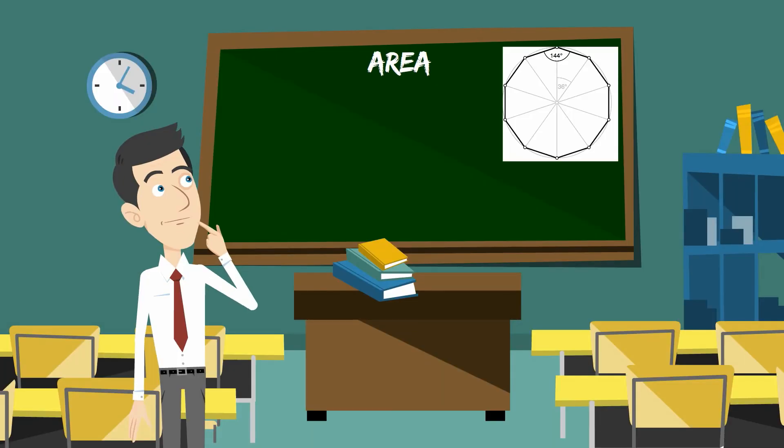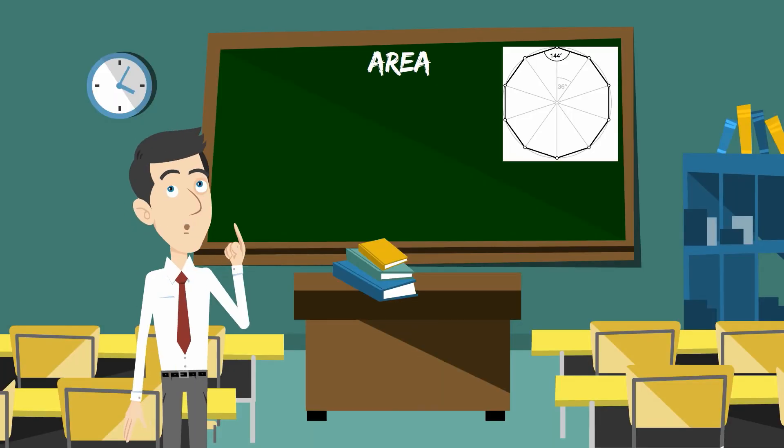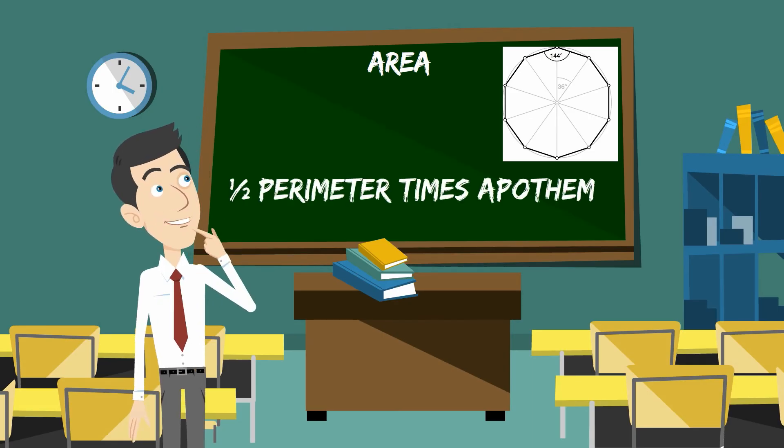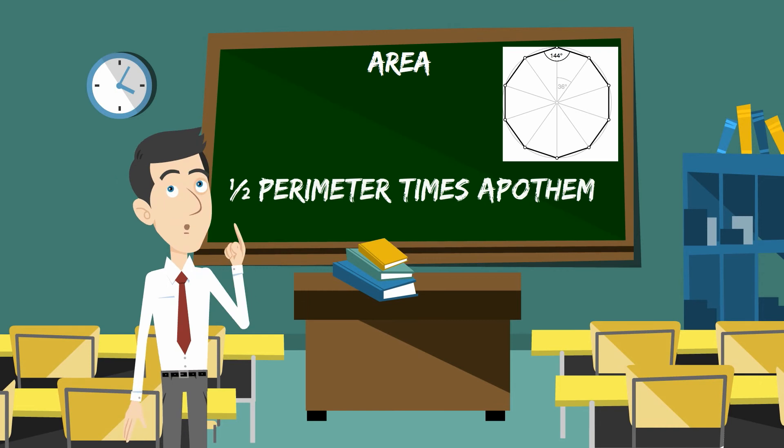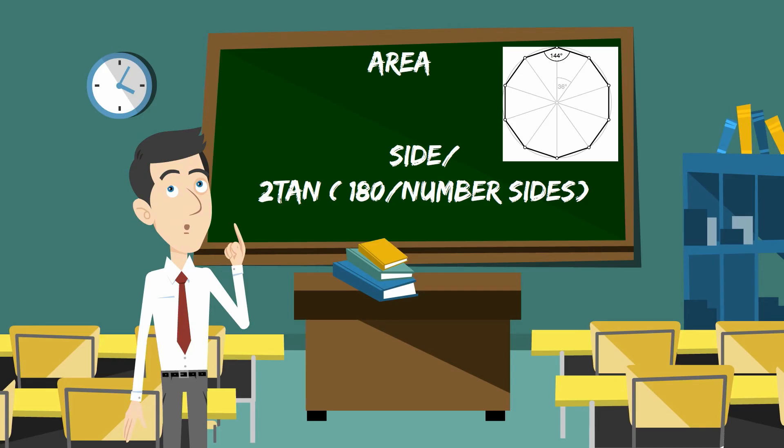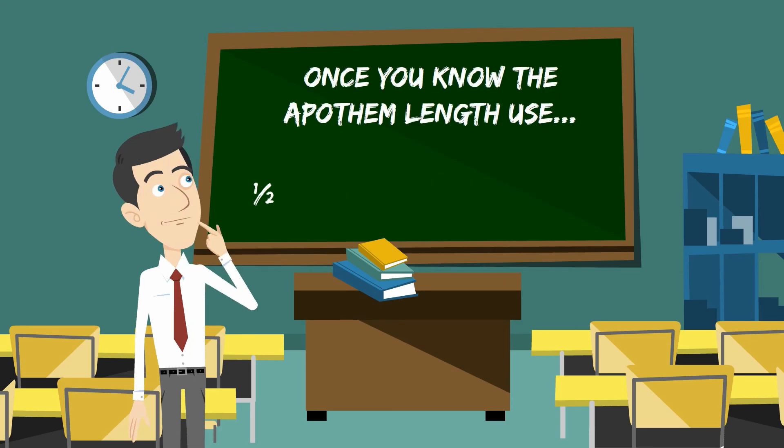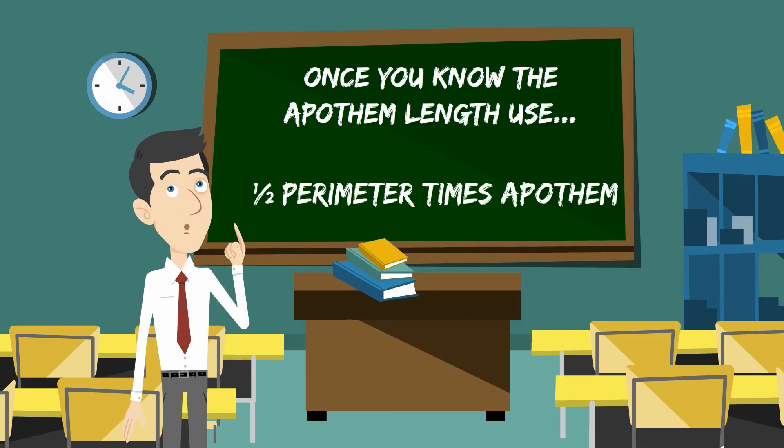You can find the area of a decagon by multiplying one-half perimeter times the apothem. If you don't know the apothem, you can find the length of the apothem by using side divided by 2 tangent times, in parentheses, 180 divided by the number of sides. The tangent will be in degrees. Once you know the apothem, then just use one-half perimeter times the apothem.